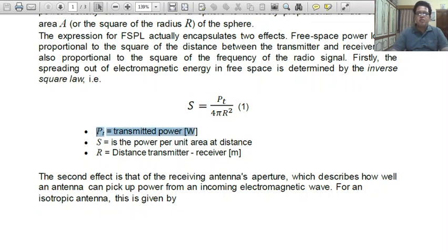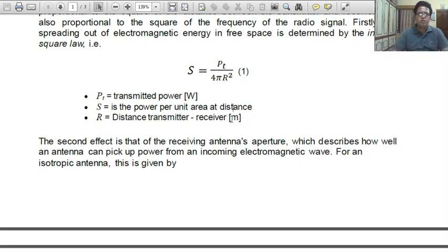Pt is transmitted power in watt from a source. And r is distance between transmitter and receiver in meter. That is 4 pi r square is its area. So, we know that electromagnetic energy in free space is determined by S equal to Pt upon 4 pi r square.